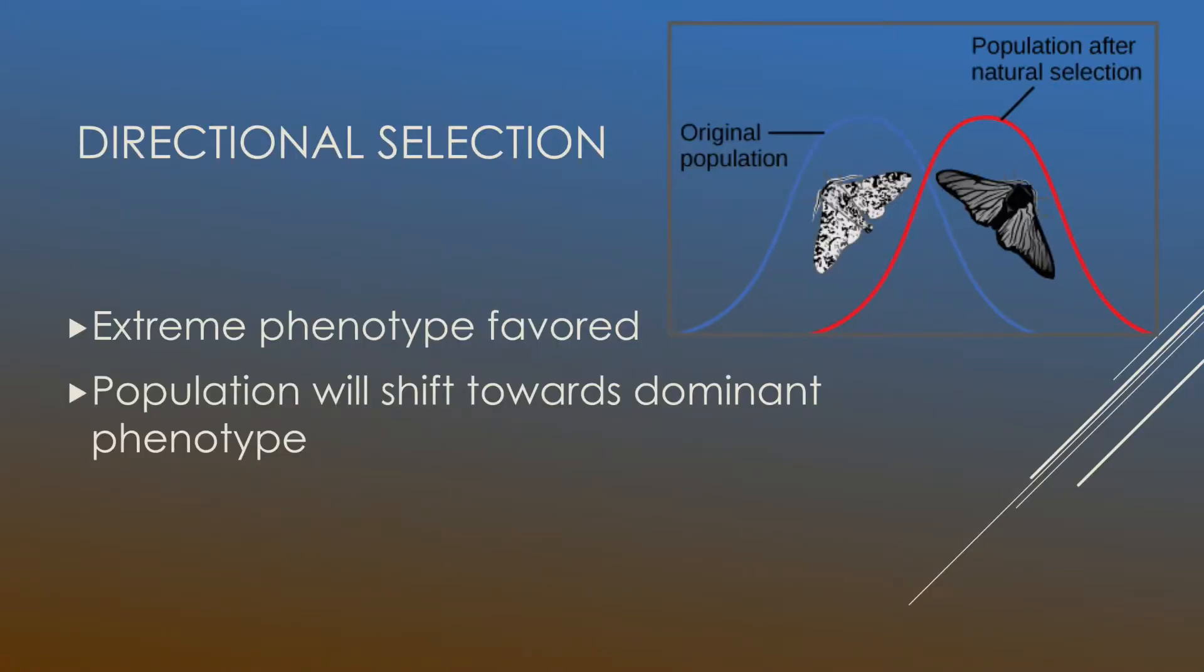So let's start with directional selection. In directional selection, the extreme phenotype will be favored. This basically means that individuals with the more extreme form of a phenotype will have greater fitness than those who do not.